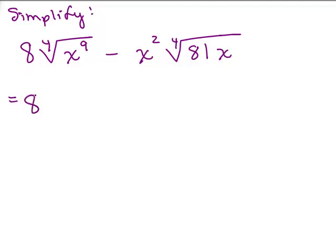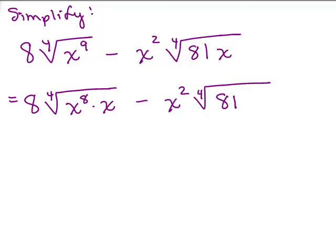We've got the 8 on the outside and we want the 4th root. Now, look at the exponents, 4 doesn't go into 9 so you have to write that as x to the 8th times x, the number that 4 does go into so there's this leftover x minus. The second one, again a 4th root, 81 is a perfect 4th so I could just take that out and you have 81 times x.